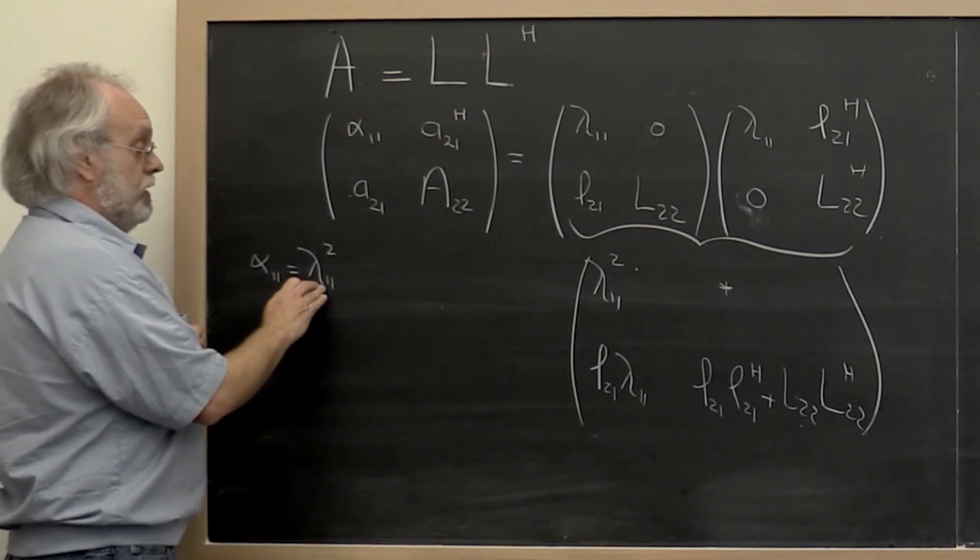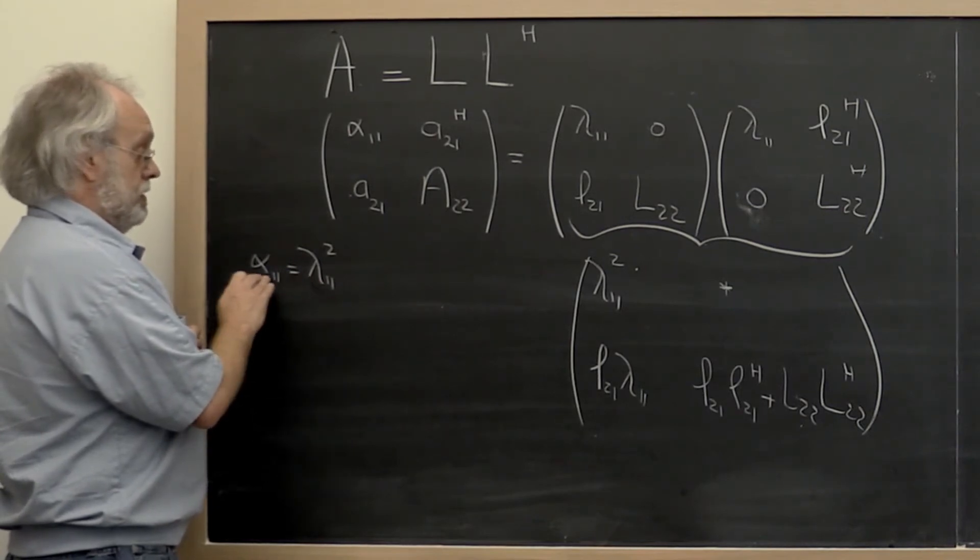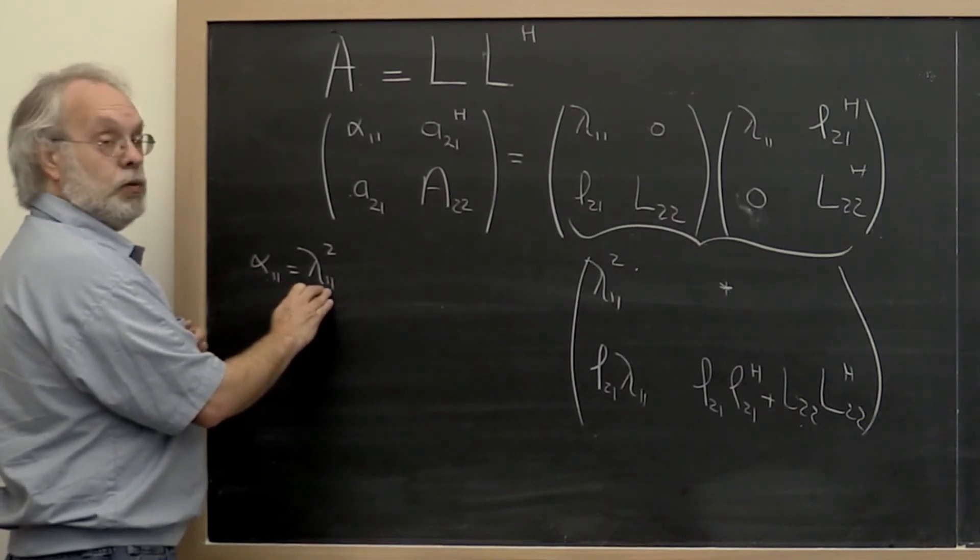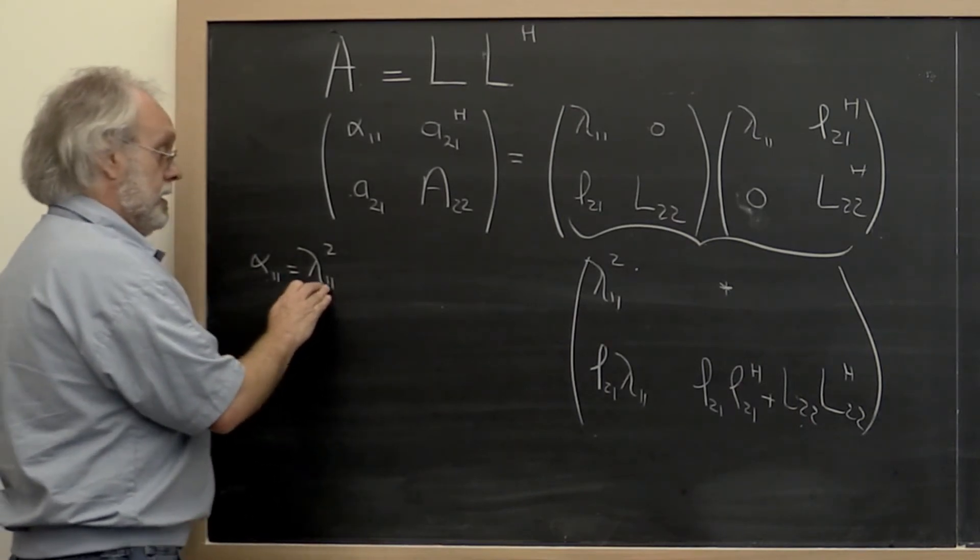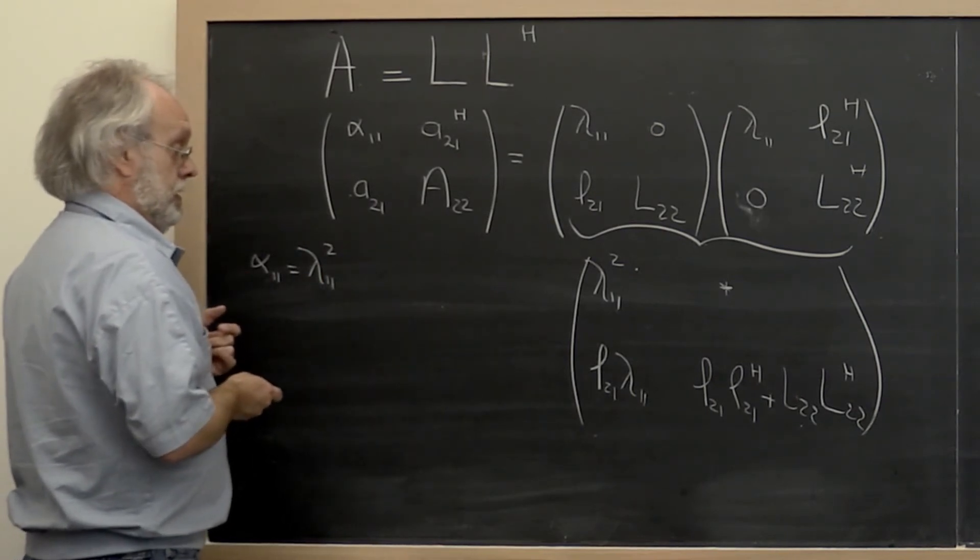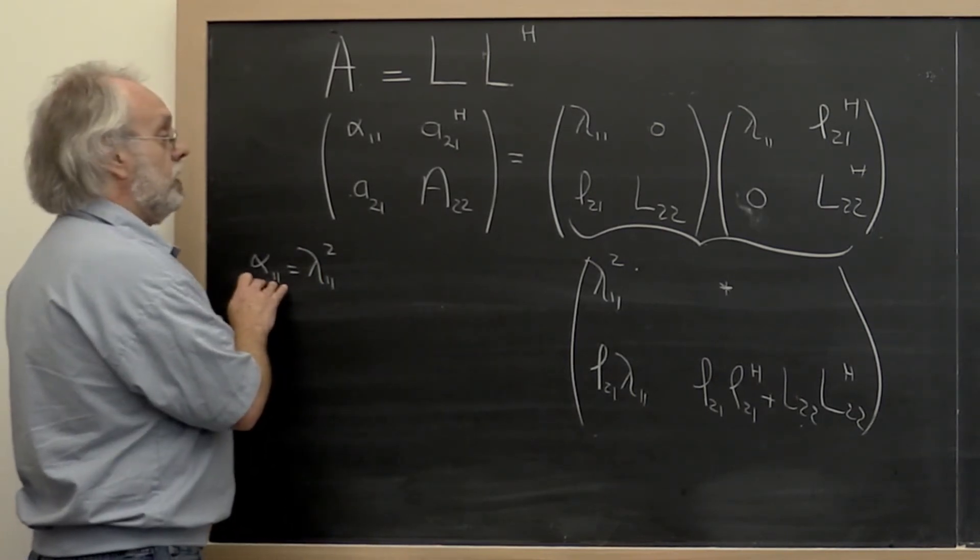And therefore we know that lambda_1,1 must be plus or minus the square root of alpha_1,1. And we choose to make it equal to a positive number. And therefore we take it to be equal to the square root of alpha_1,1. Now wait a minute.